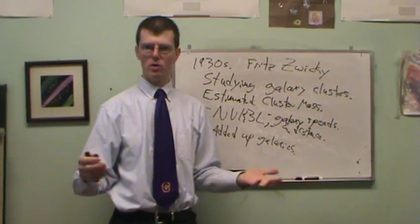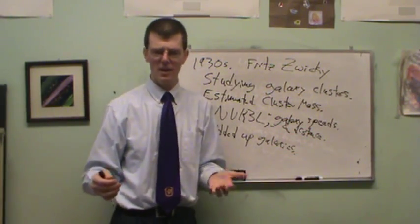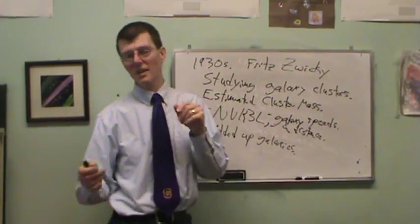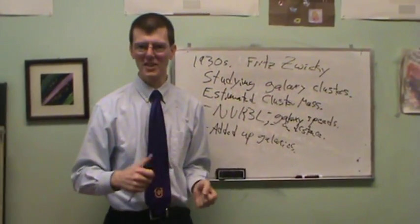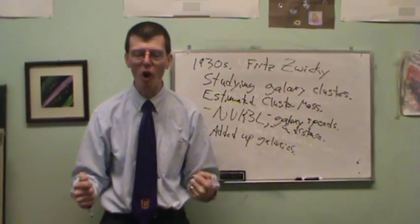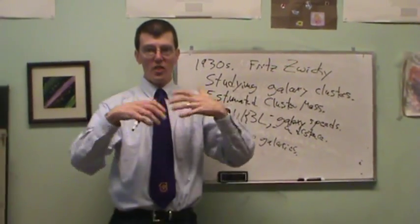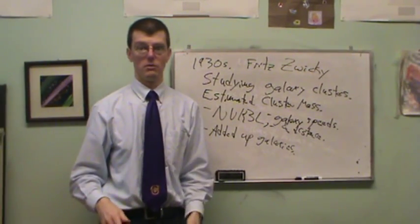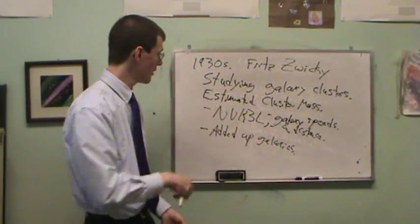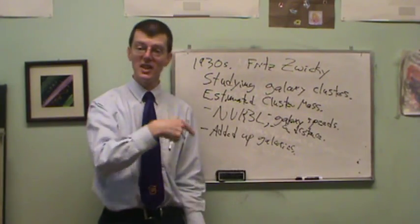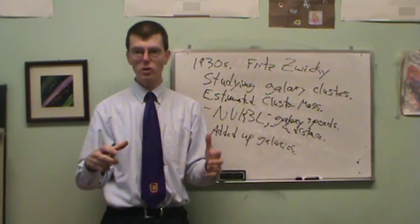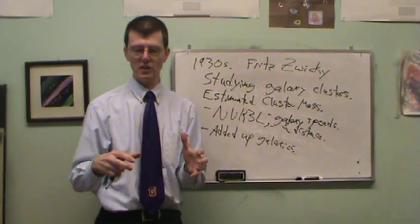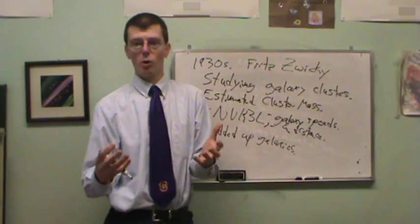So he's like, good grief. A factor of two, 20% more, they shouldn't match up exactly, but 10 times more? Holy cow, there must be 10 times more stuff there than just the stuff we can see. So what is it? Based on this, Fritz Zwicky says that means this galaxy cluster is mostly something else, not galaxies, and there's 10 times more stuff out there.